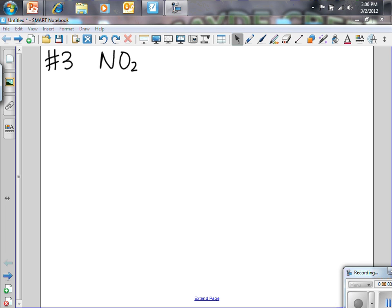So we were talking about exceptions to the octet rule in class today, and I'm going to work through number three from the worksheet you got, which is nitrogen dioxide, and we're going to start by drawing the Lewis dot structure for nitrogen.